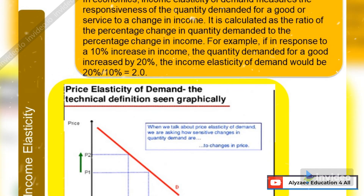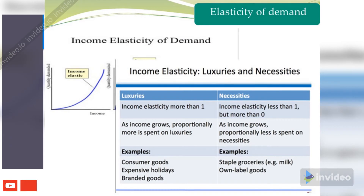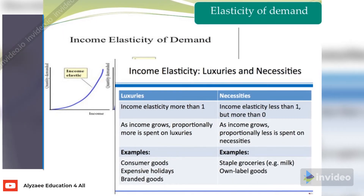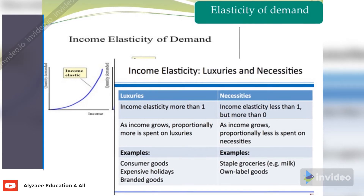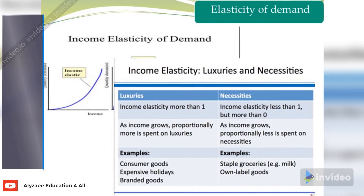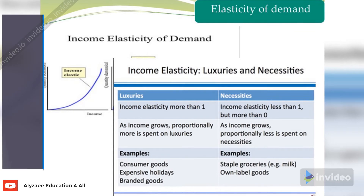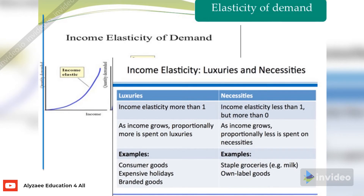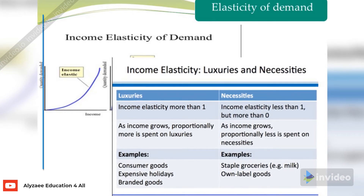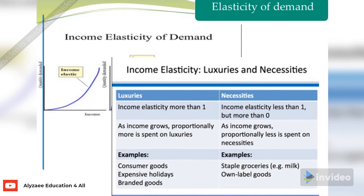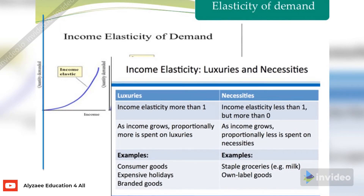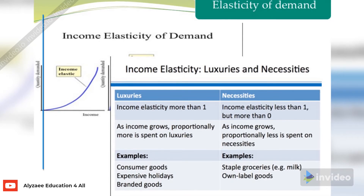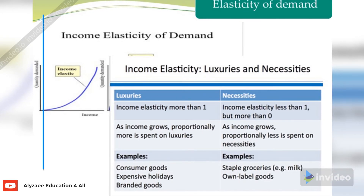Looking at income elasticity in the comparison between luxuries and necessities, here is a comparison table to better understand it. For luxuries, income elasticity recalculated through the formula is more than one. For necessities, income elasticity is less than one but not less than zero. As income grows, proportionally more is spent on luxuries, whereas proportionally less is spent on necessities.